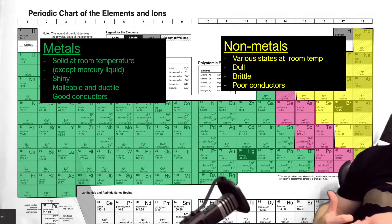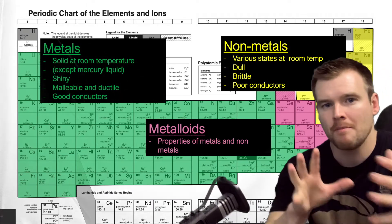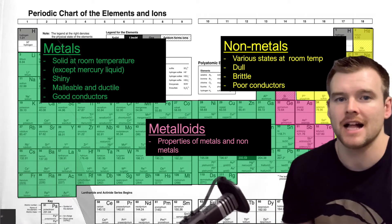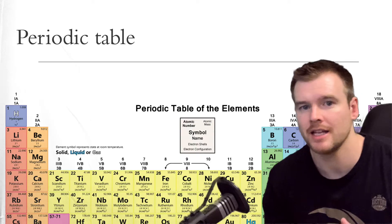Right in the middle there, in between the metals and the non-metals, you can see that pink group, which is the metalloids. So as we go from metals to non-metals, there's kind of some there in between. They have some metallic and some non-metal properties. That's going to be the metalloids in the middle there.